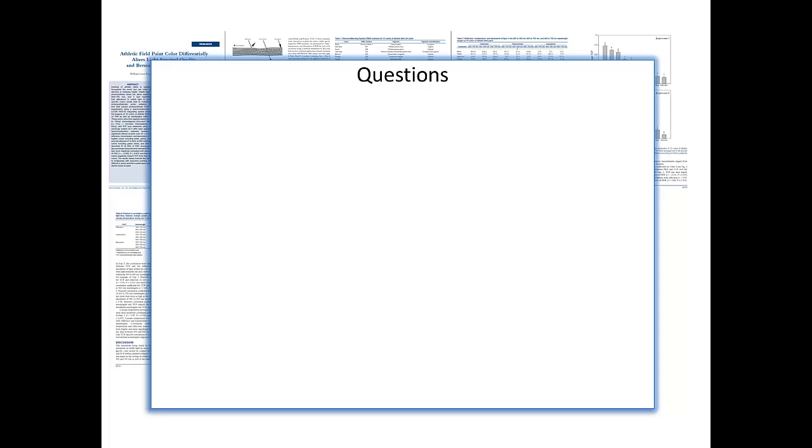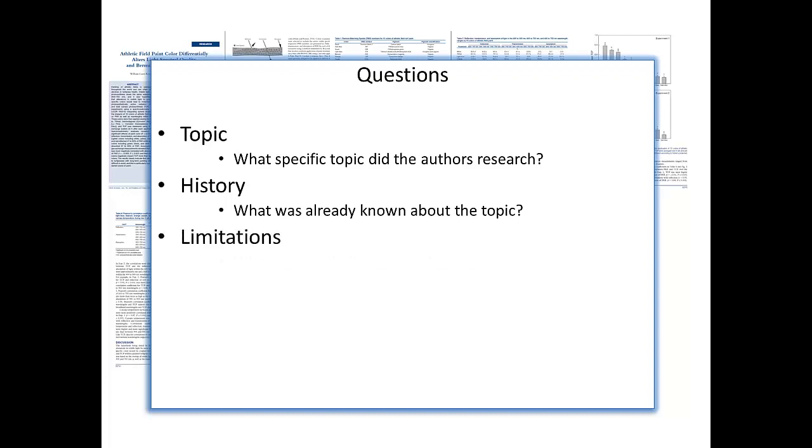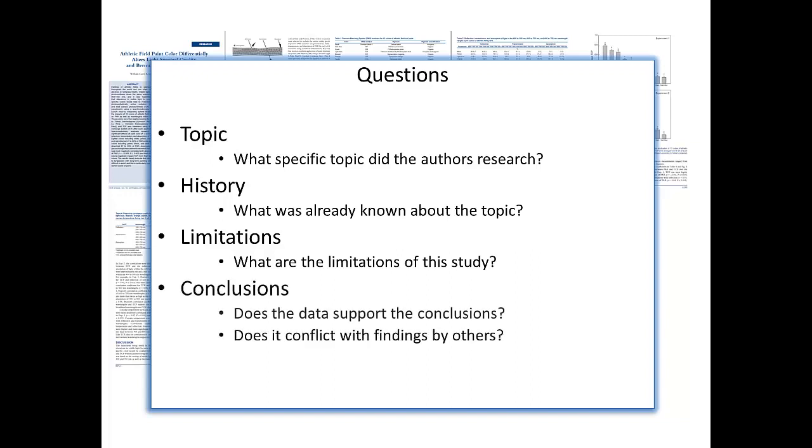While reading the article, ask yourself these questions: What specific topic did the authors research? What is already known about the topic? What were the limitations to the study? Do the results apply broadly, or are they limited to specific situations? Does the data support the conclusions reached? Does it conflict with the findings by others? Do you agree with what the authors are saying? And finally, how does this article contribute to answering the research question? Finding answers to these questions will improve your comprehension of the article and help you think critically about the topic.